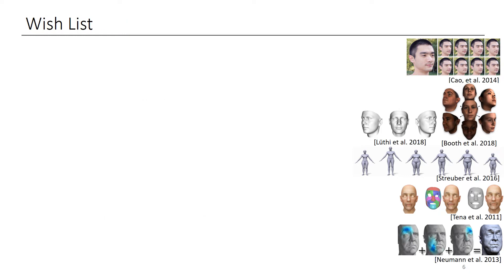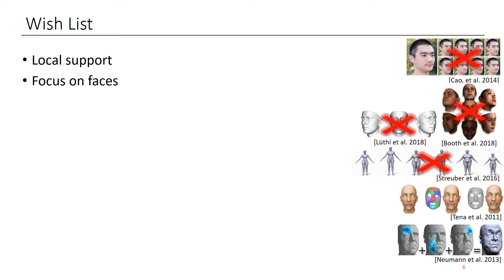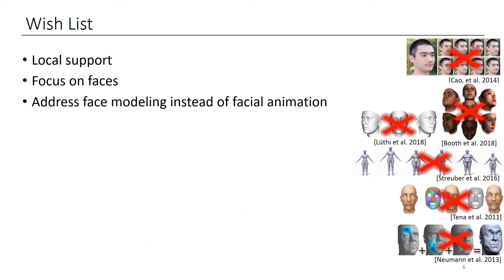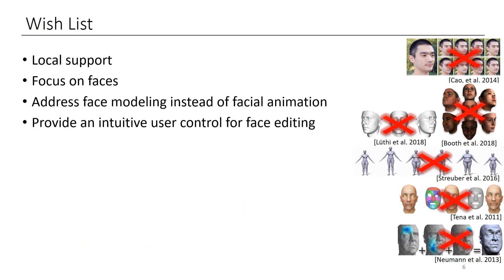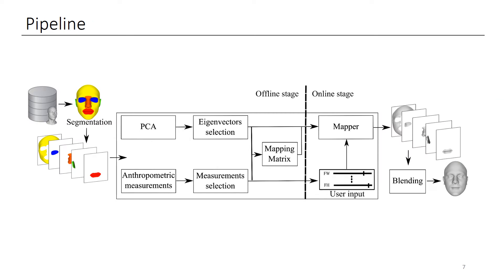In comparison with the related work methods, our approach aims at providing local control in editing. It focuses on faces — we address face modeling instead of face animation. Finally, our approach allows an intuitive facial attribute editing workflow. Here is the overview of our approach: we want to produce a high-end tool that generates realistic character heads and reuses available data. We have an offline stage that leads to an online stage where the face can be edited in interactive time.